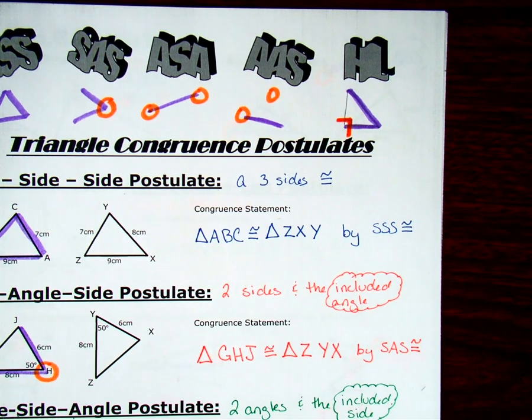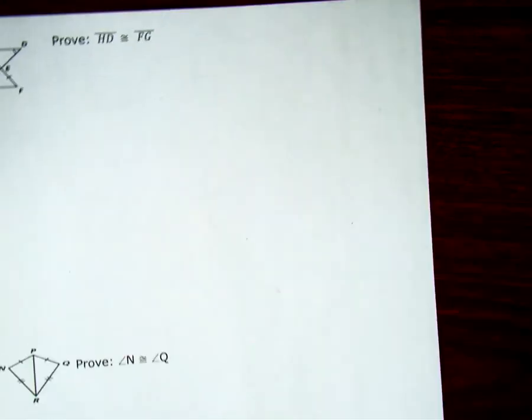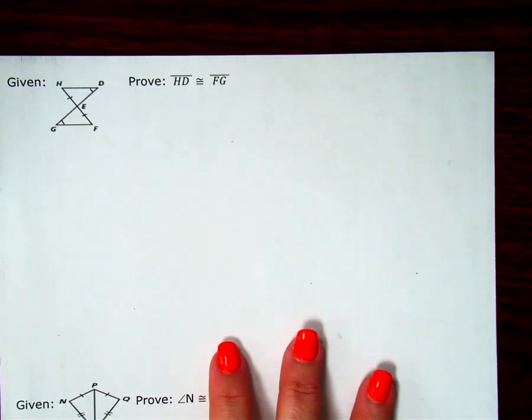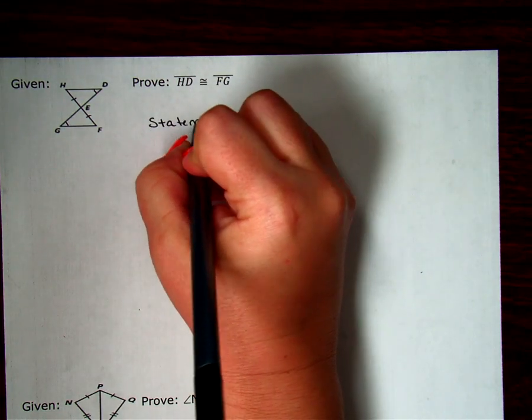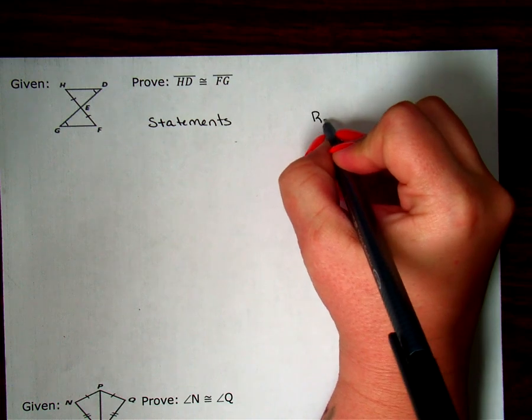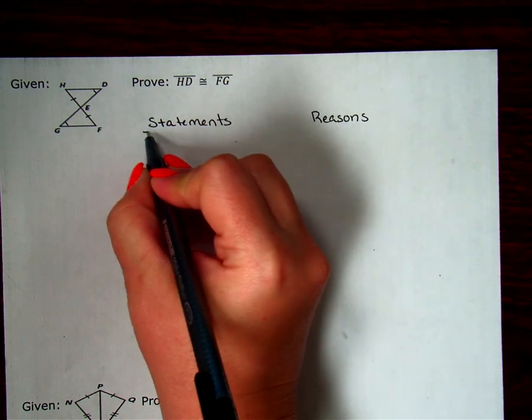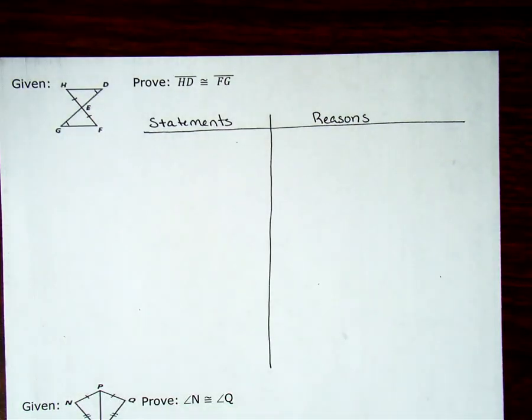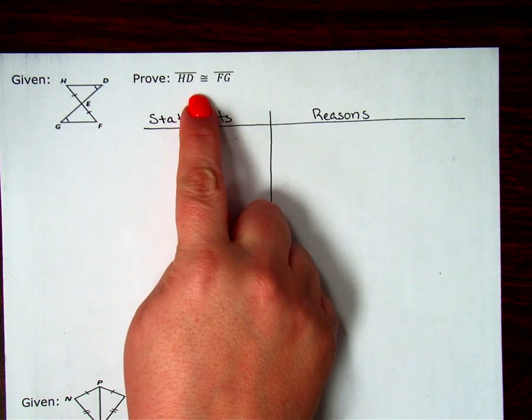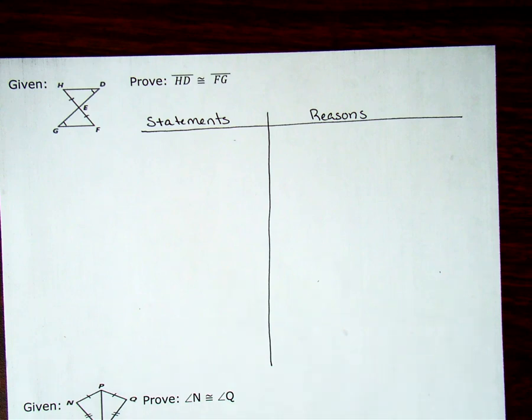What we're going to look at in this video is what do we do with these when we're working with proofs. So when I start this proof, I'm going to start with making my table statements and reasons. And then when I see given, they've just given me a picture. I can't immediately go to saying I have congruent triangles.